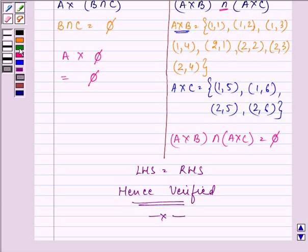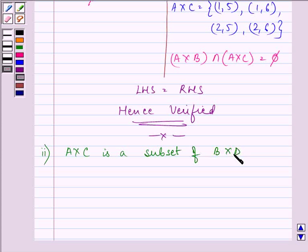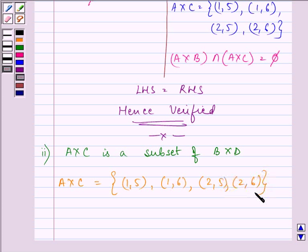Proceeding on to the next part. Here, we need to verify that A × C is a subset of B × D. Now, let us first find out A × C. It would be (1, 5), (1, 6), (2, 5), and (2, 6), which we found out in earlier part also.